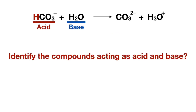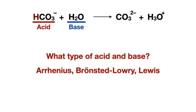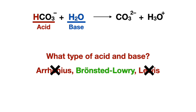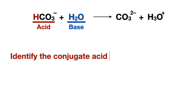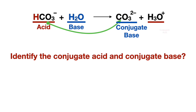Now we identify the type of acid and base. There was a proton donor, which means it cannot be Lewis, and the base is not a hydroxide so it can't be Arrhenius, leaving us with a Bronsted-Lowry acid and base reaction. To identify the conjugate acid and base, follow the acid compound to the product side and call that the conjugate base, making the other product the conjugate acid.